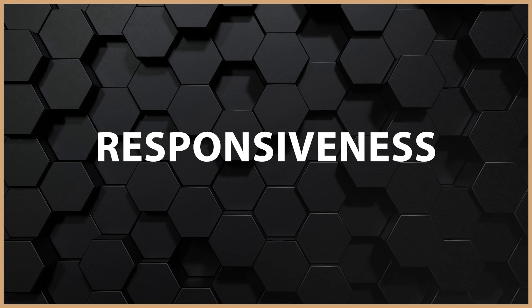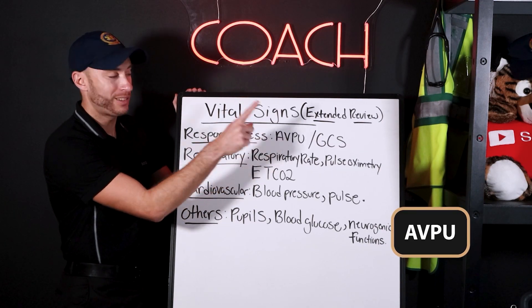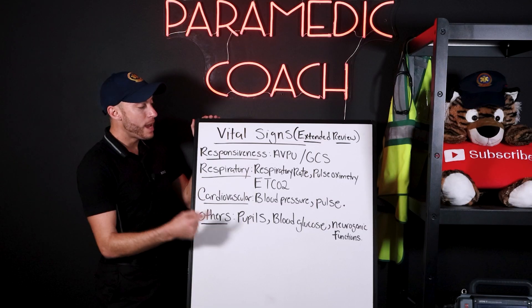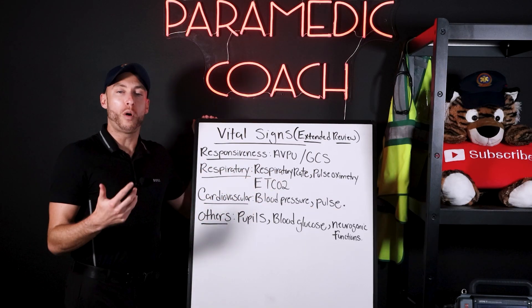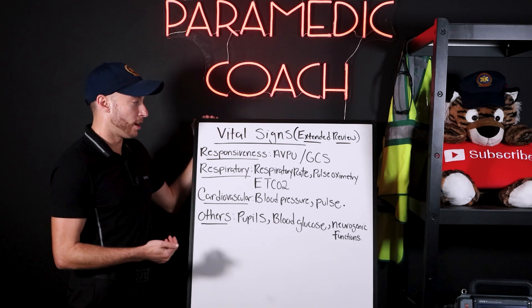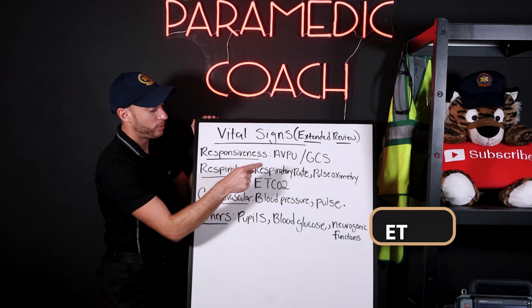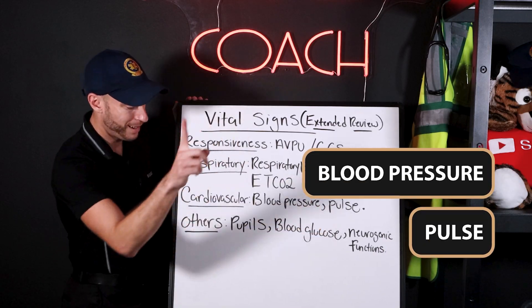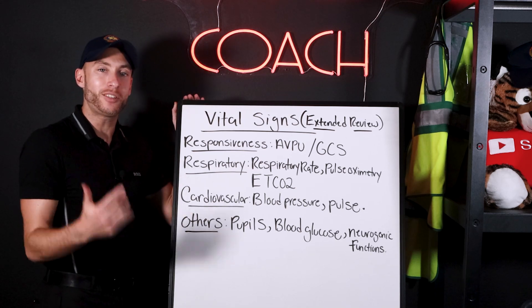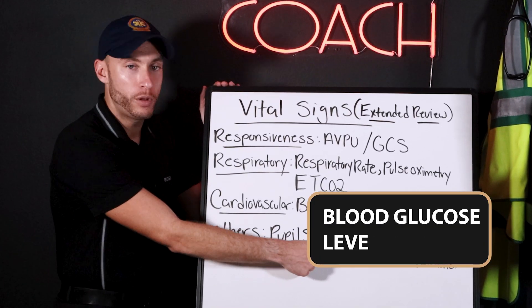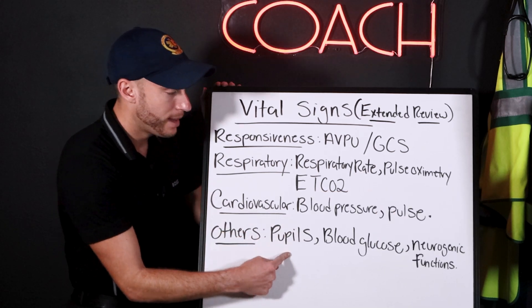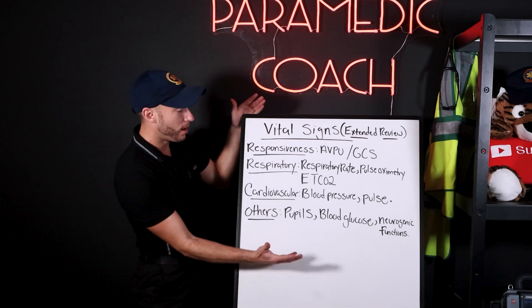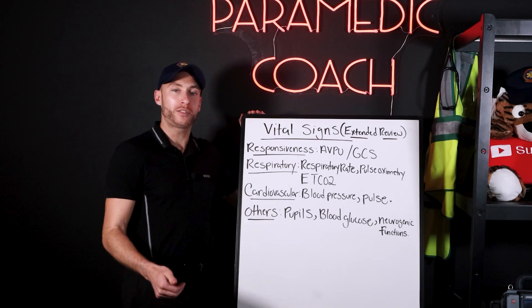First is responsiveness. We check that using the AVPU scale and GCS — getting a score. On the respiratory side, we look at respiratory rate, but also the quality and depth of respirations. Are they adequate? What about pulse oximetry and end-tidal CO2? On the cardiovascular side, we have blood pressure and pulse. And there are accessory things: blood glucose level, pupils, and neurogenic functions like pulse motor sensory.